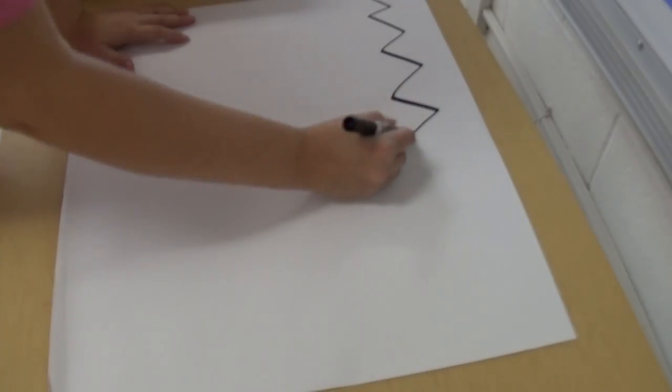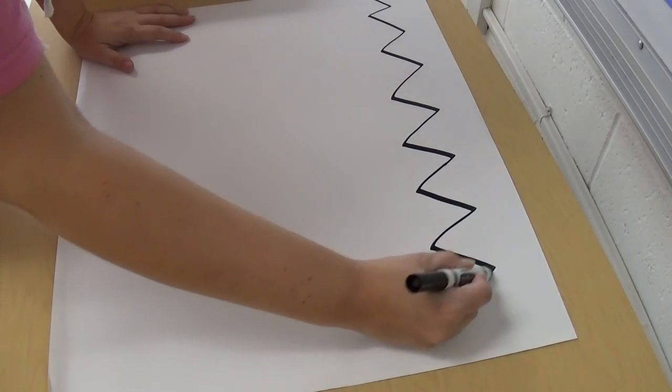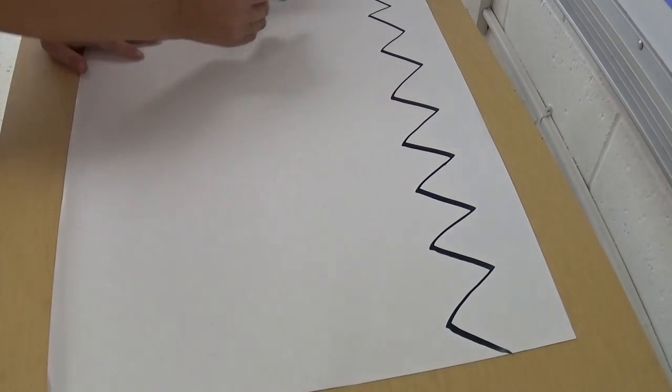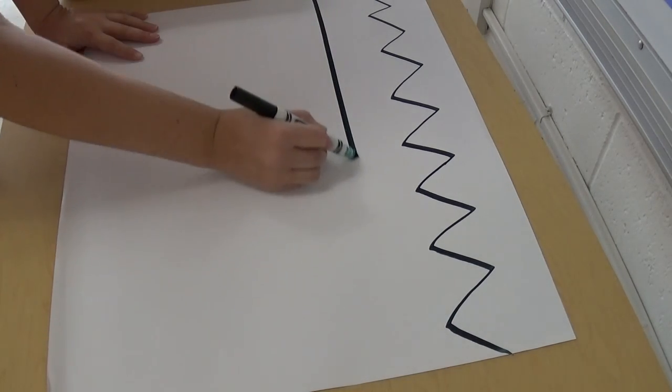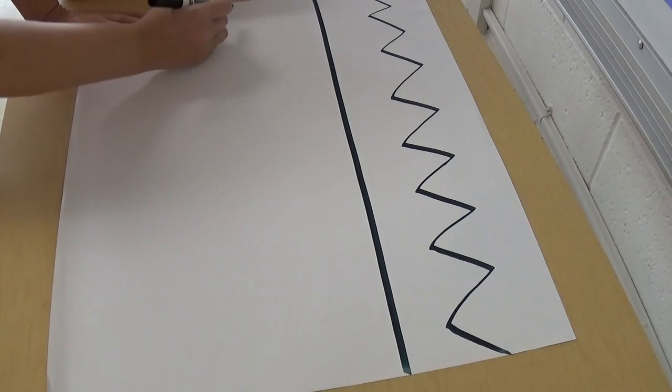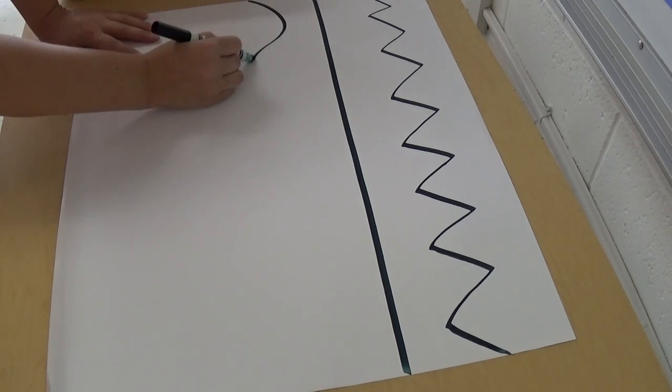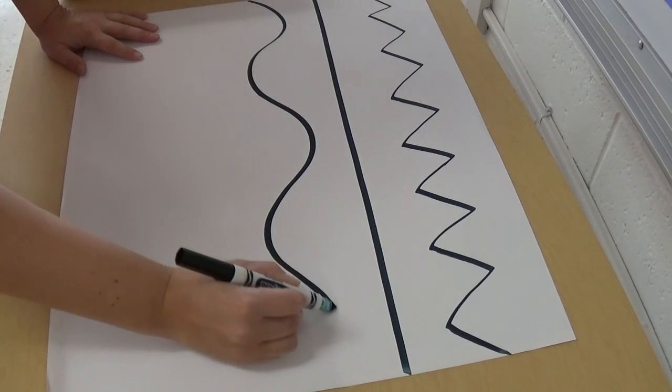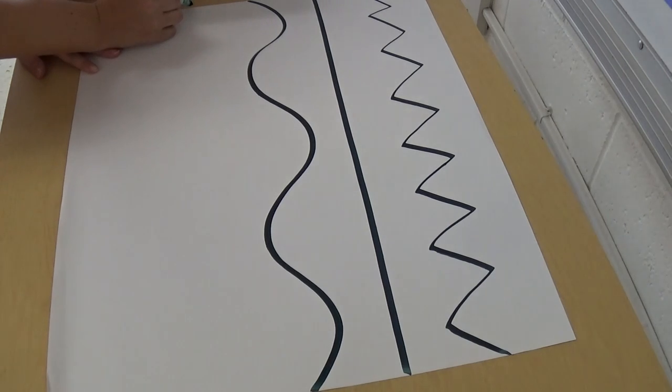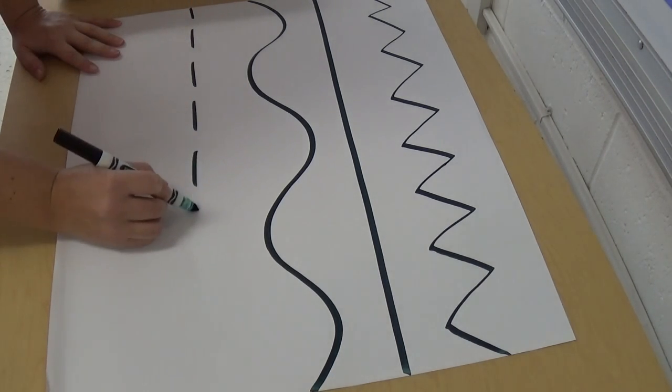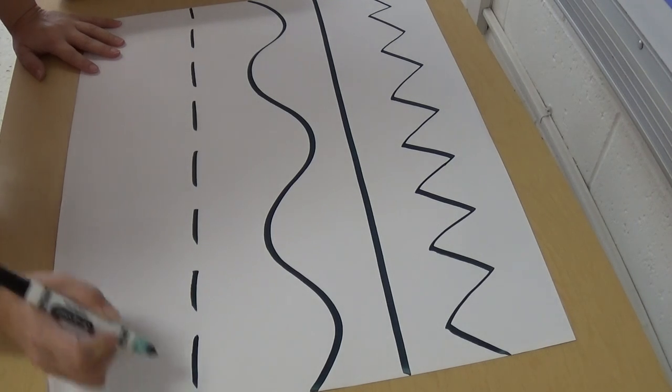Okay, so make nice big line shapes. Go all the way across your paper from one side to the other. You can choose what kinds of lines you want to make, all different lines. You can make zig-zags, straight lines, dotted lines, dashed lines, curvy lines.